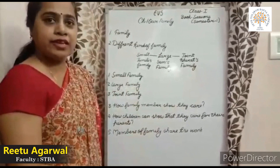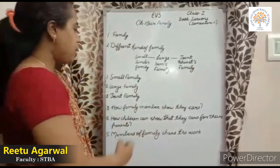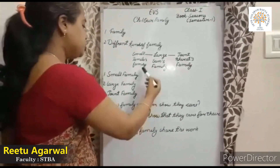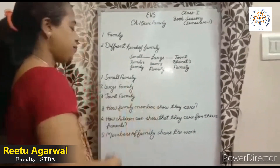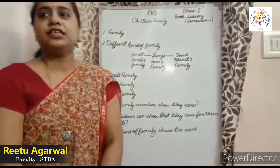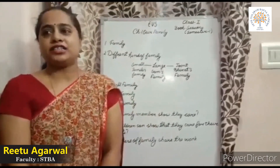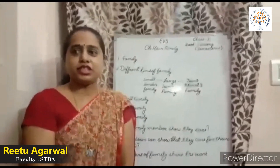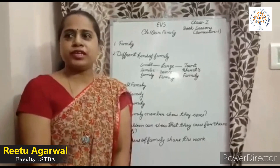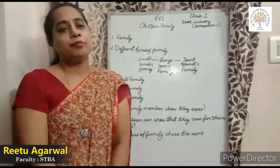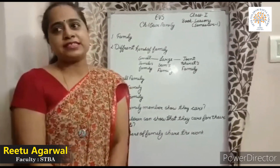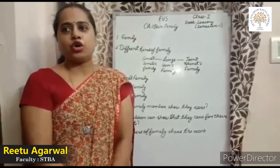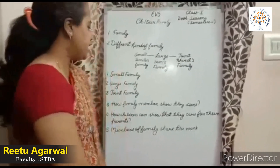Now I will explain about small, large, and joint family. Small family: a small family is usually made up of parents and one or two children.